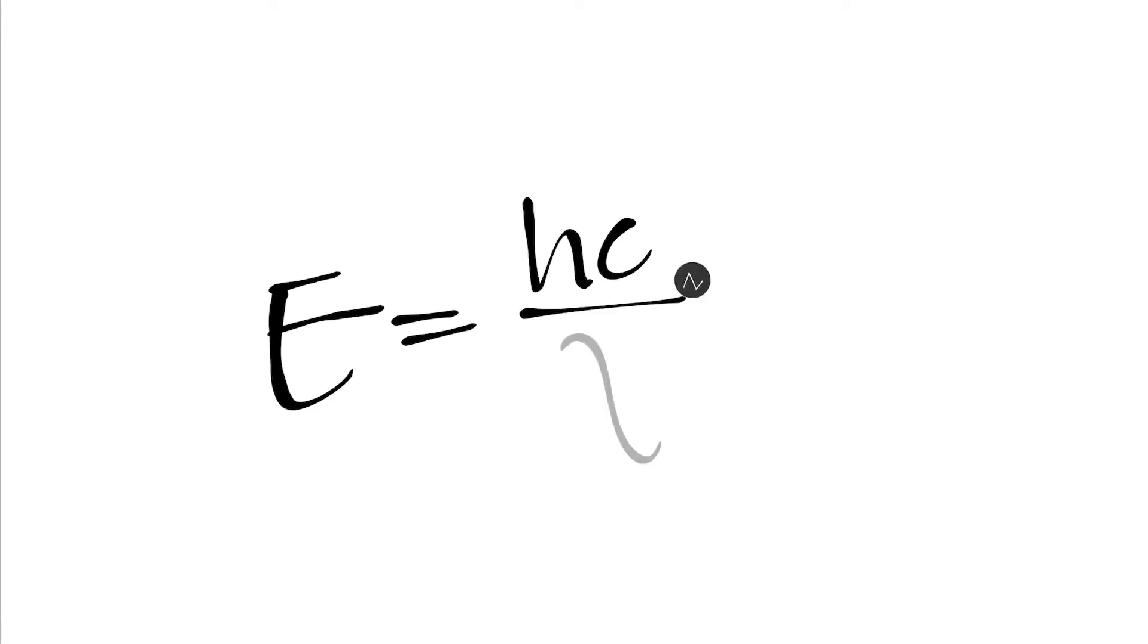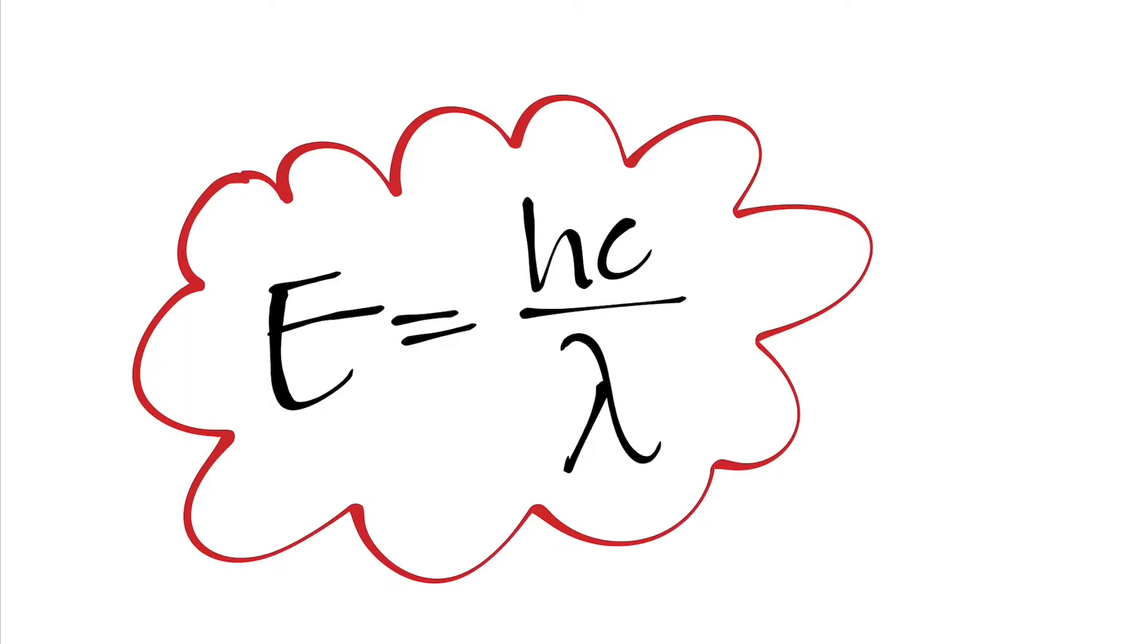Now one of the things that I like to do when I'm dealing with E equals hc over lambda is to go ahead and use a shortcut. That helps to reduce the amount of work I have to do when I'm using this equation. The shortcut applies to the hc in the numerator of this fraction.